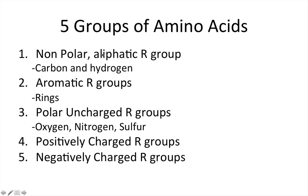So there are five groups. The nonpolar aliphatic R group, which basically means the R group contains carbons and hydrogens. The aromatic R groups, which means it's a ring structure. There are polar uncharged R groups, which means the R group contains some form of oxygen, nitrogen, or sulfur. And then these last two are pretty self-explanatory: the R group can either be positively charged or negatively charged.